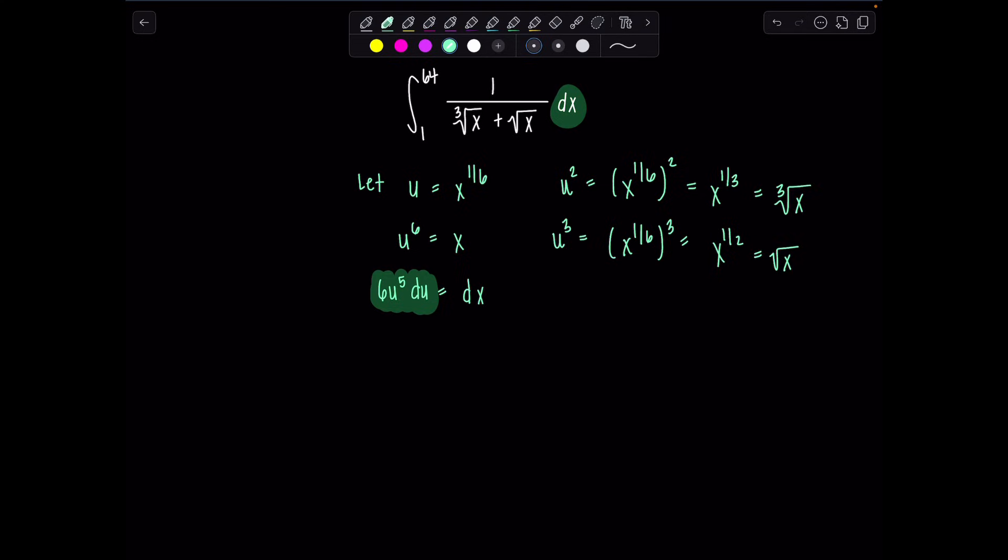One last thing. Don't forget to change your limits of integration. So u of 1 is 1 to the 1/6. That's 1. And then u of 64 is 2. Oh, whoever wrote the problem loved us. Here we go. So new integral goes from 1 to 2. dx is 6u to the 5th du over cube root of x is u squared. How are we doing?